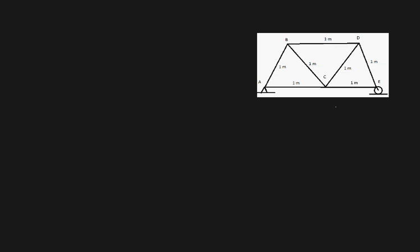In this video I'm going to be showing you how to calculate the reaction forces for a simple truss. This truss is fairly simple in the sense that all the lengths of its members are one meter, and we're going to assume that the mass of the entire truss is so small it can be considered zero. To make this problem a little bit more interesting, let's consider an external force on point C acting downwards of 20 kilonewtons.